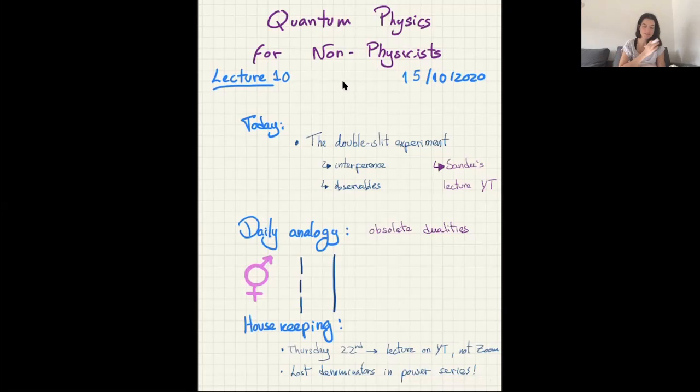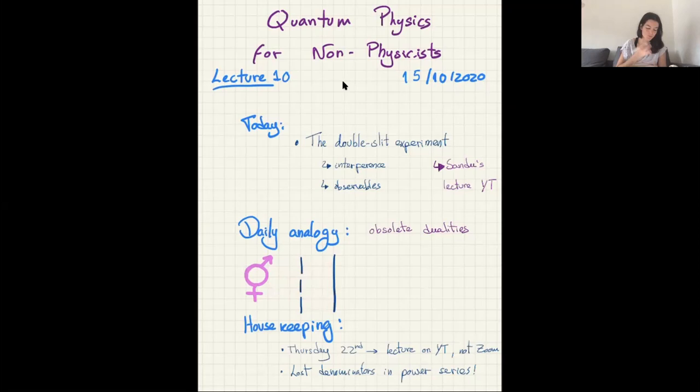The daily analogy is about obsolete dualities. To explain this, I have to explain a little bit about what the double slit experiment is. The idea is that we have some source of light, electrons, protons, or atoms, and we send them through a wall that has only two little slits.